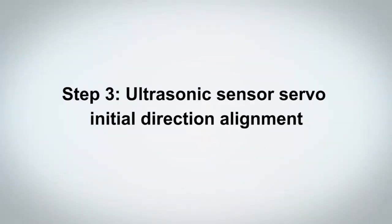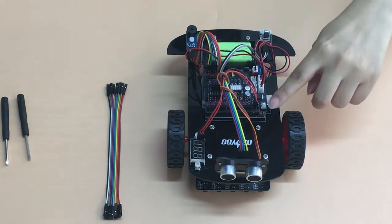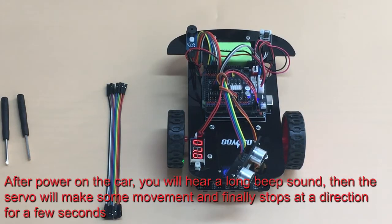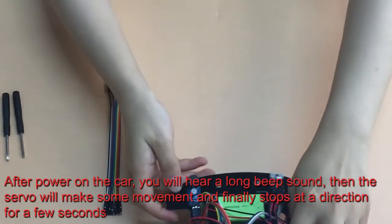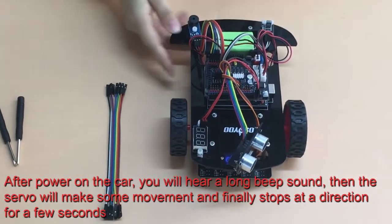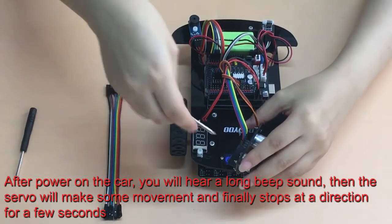Step 3: Ultrasonic Sensor Servo Initial Direction Alignment. After powering on the car, you will hear a long beep sound, then the servo will make some movement and finally stops at a direction for a few seconds.